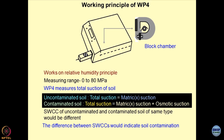Most WP4 instruments work in the range of 0 to 80 MPa suction, though newer models go up to 350 MPa. However, we have proven that these instruments cannot be reliably used for the range of 0 to 1500 kPa — for that, the pressure membrane extractor works better. In short, pressure membrane extractor and WP4 results should be used together to get the complete SWCC.